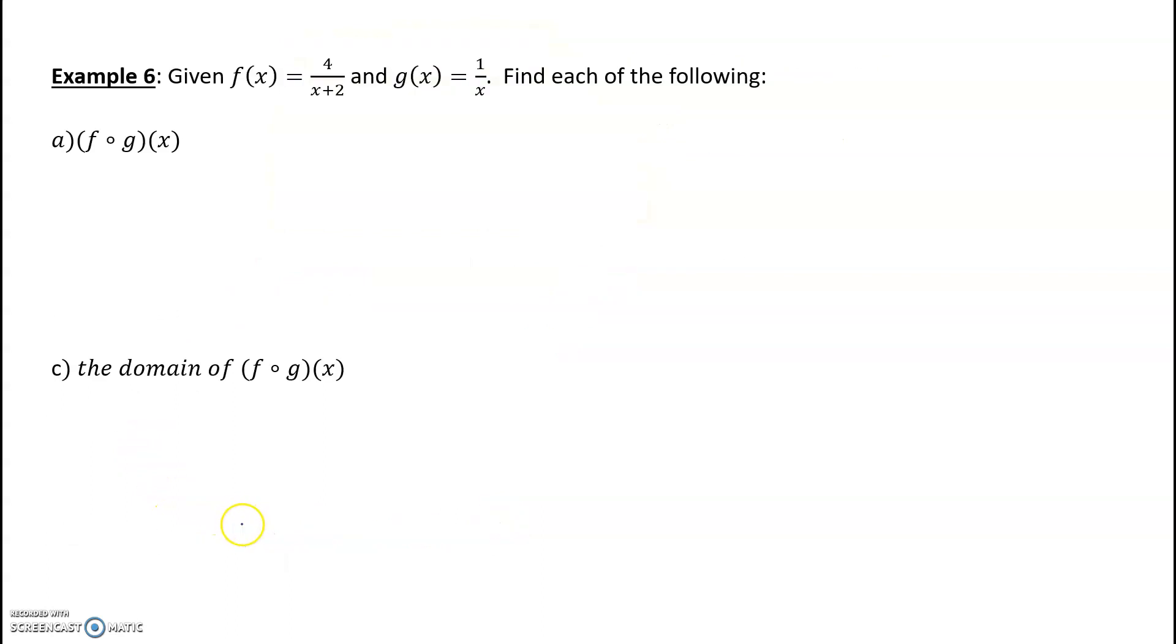Alright, moving on. Now last example. Wish I could have got that in in 15 minutes. So here, F of G of X. Again, start inside. So we want F of, and instead of G of X, I can write 1 over X. So what that means is you're going to go to F, and you're going to plug in 1 over X. So we're going to go to F, and instead of X, we're going to put 1 over X. Still plus 2.